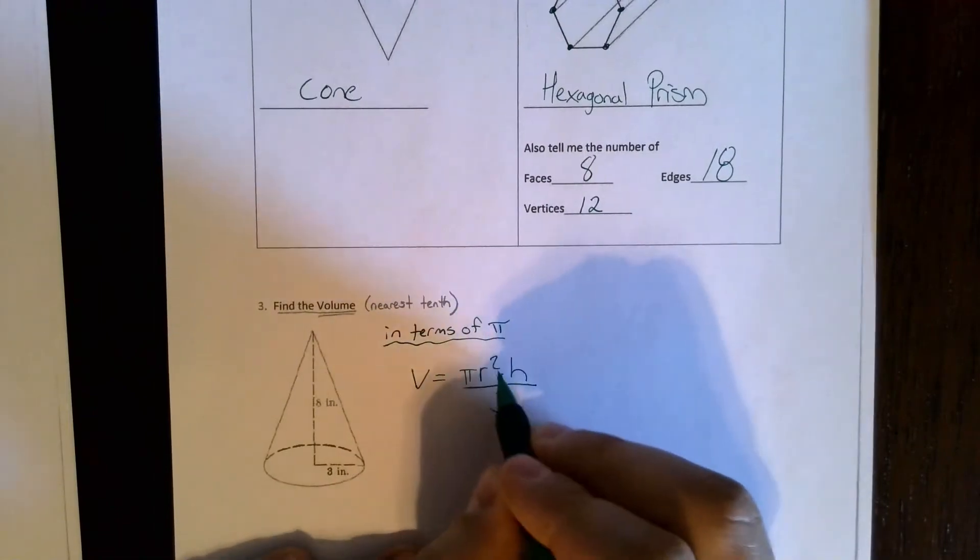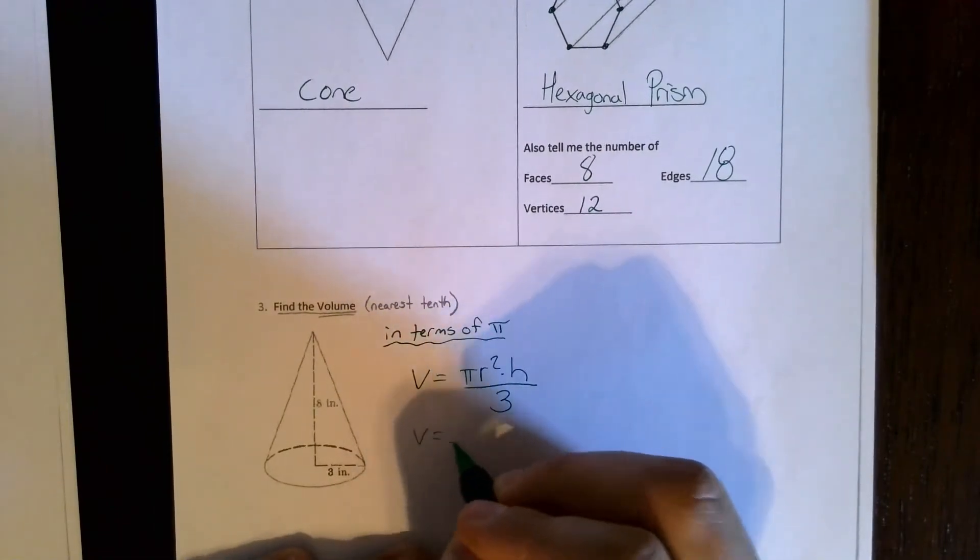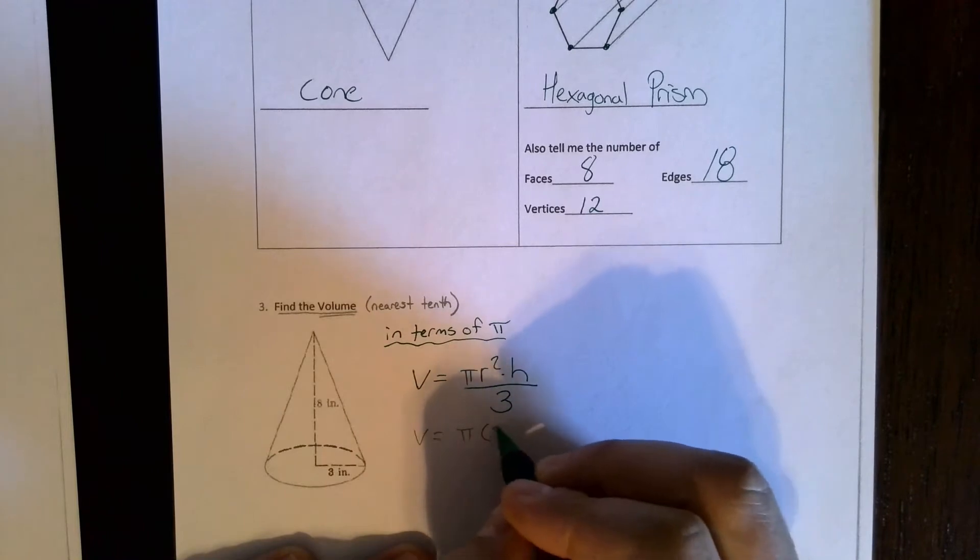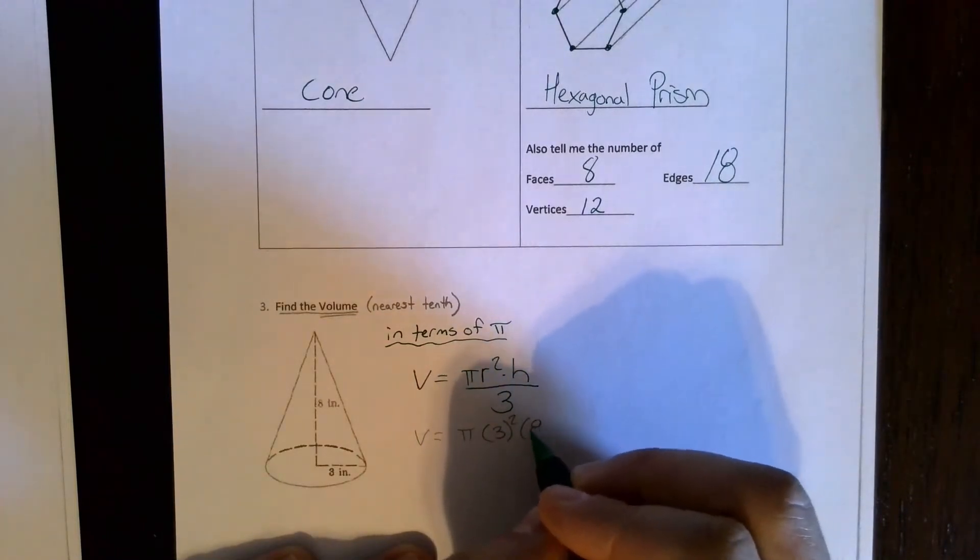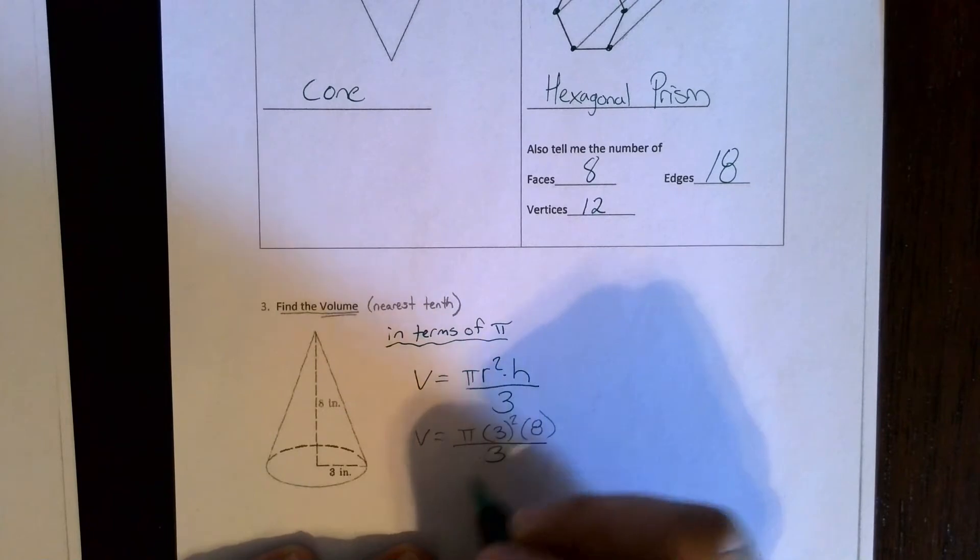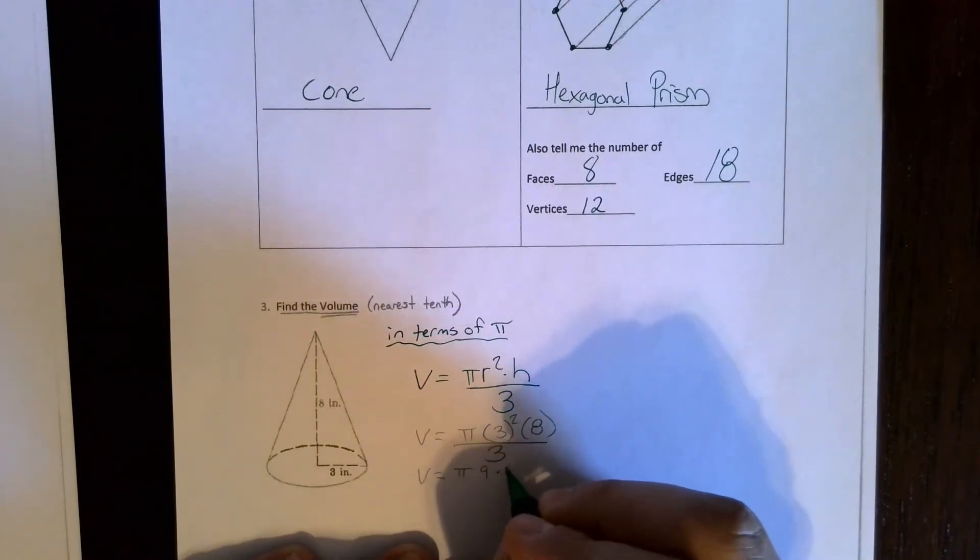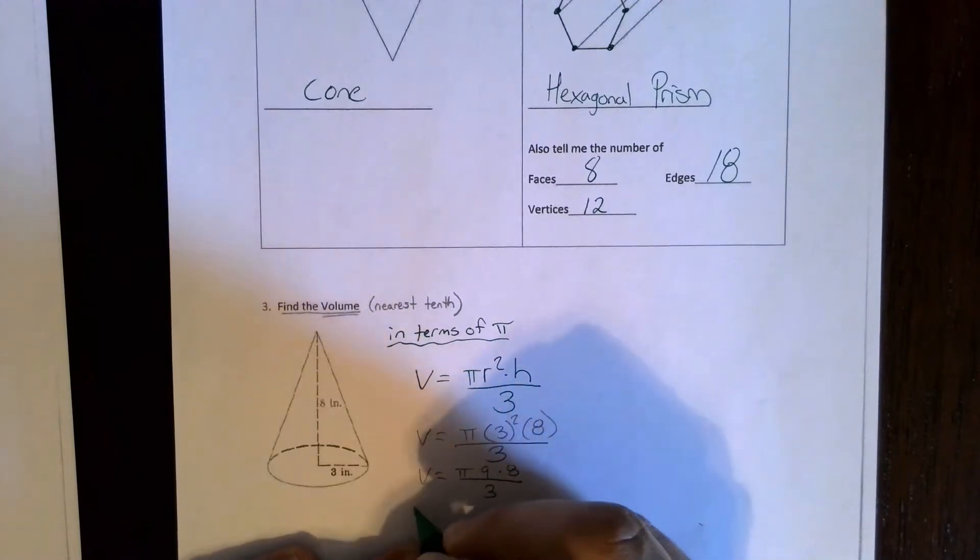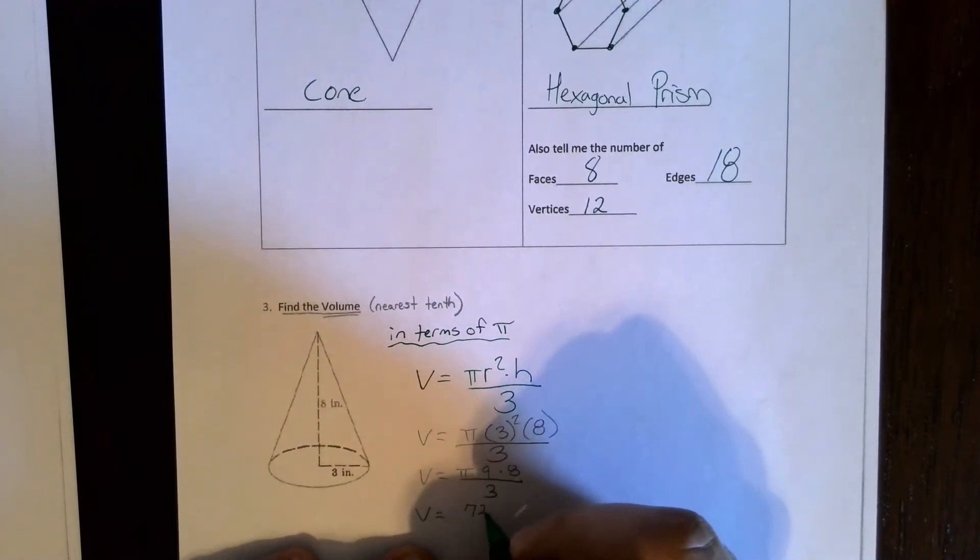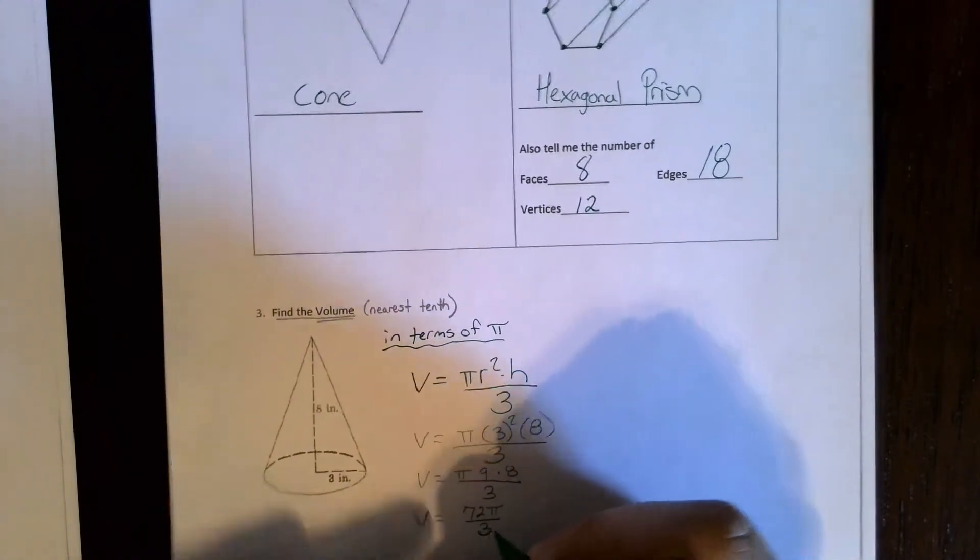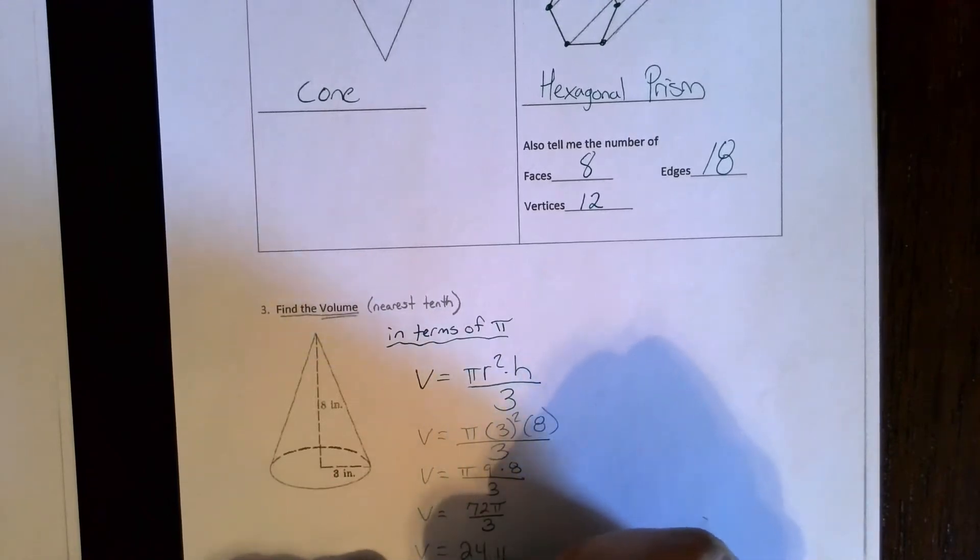Alright, number three. I had the formula here: pi r squared times h divided by 3. I'm going to plug in the radius of 3 and the height of 8. So I get pi times 3 squared is 9, times 8 over 3, gives me 72 pi over 3, which is 24 pi inches cubed.